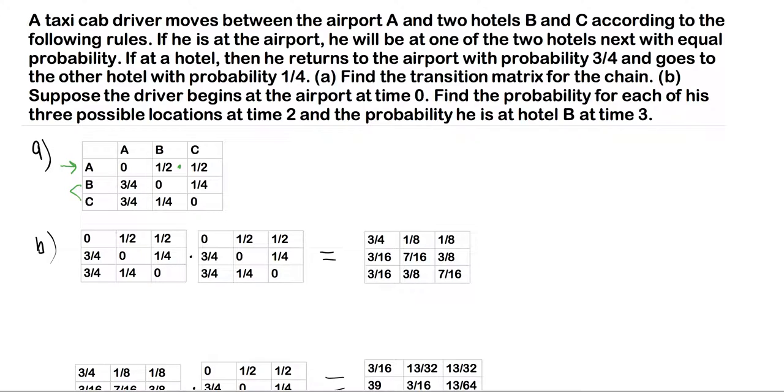you're already at B, so the probability of getting to B is zero and then going from B to C is one-fourth. And likewise with part C. So that's part A. It's a pretty straightforward transition matrix given the information from the problem.